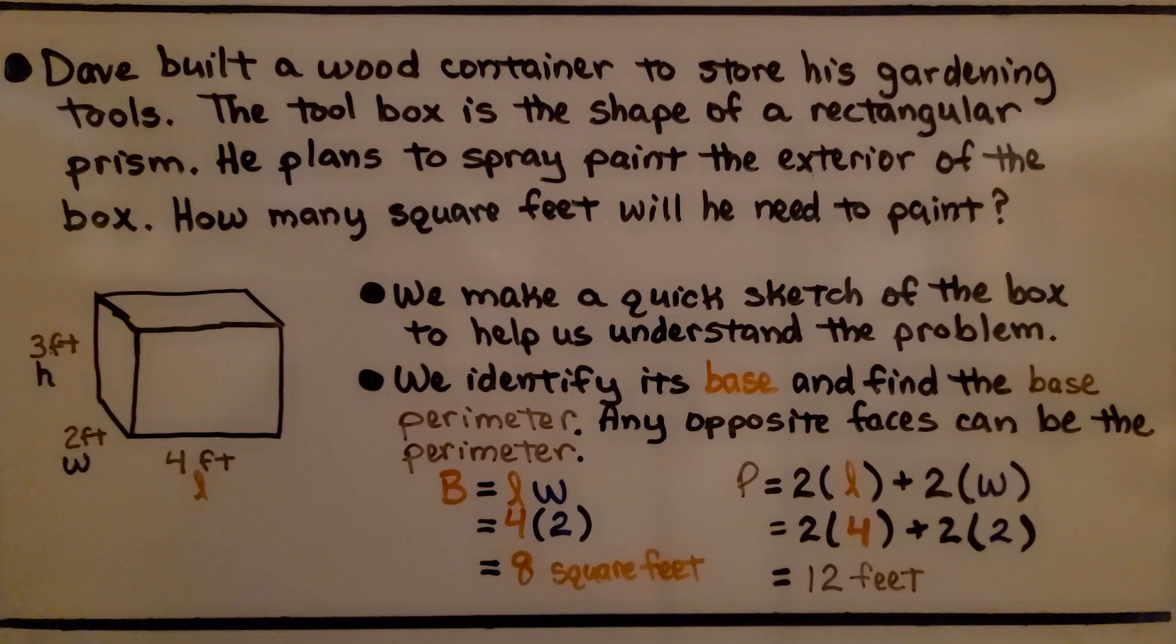And find the base perimeter. Any opposite faces can be the perimeter, but I've chosen to use this bottom. It's going to be length times width for the area of the base. That would be 4 times 2, which is 8 square feet.